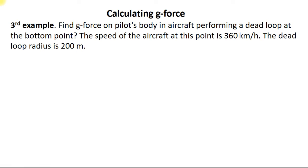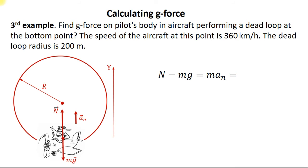There are two forces acting on the pilot's body at the bottom point of a dead loop: mg and N. According to Newton's second law, the difference between these forces equals ma, where a is normal acceleration. It equals the square of the aircraft's speed divided by the loop's radius.